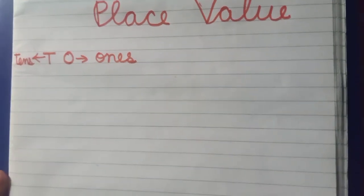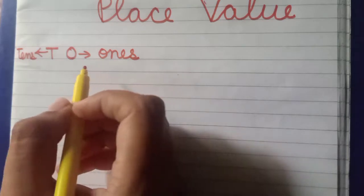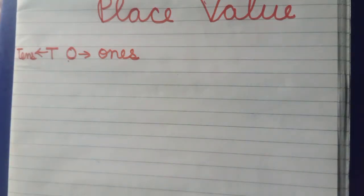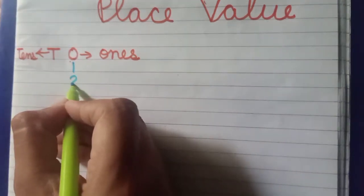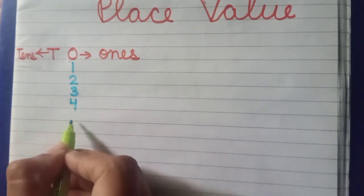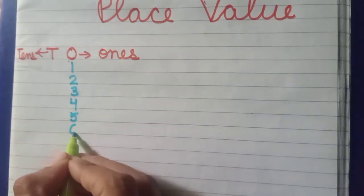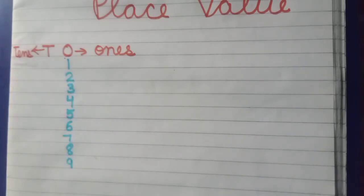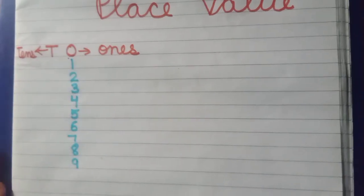Jab bhi hum counting likhte hain, we always start from ones place. Hum hamesha ones place se start karte hain digits likhna. Like 1, 2, 3, 4, 5, 6, 7, 8, 9 — these all are ones place. Ye saare numbers ones place pe hain.